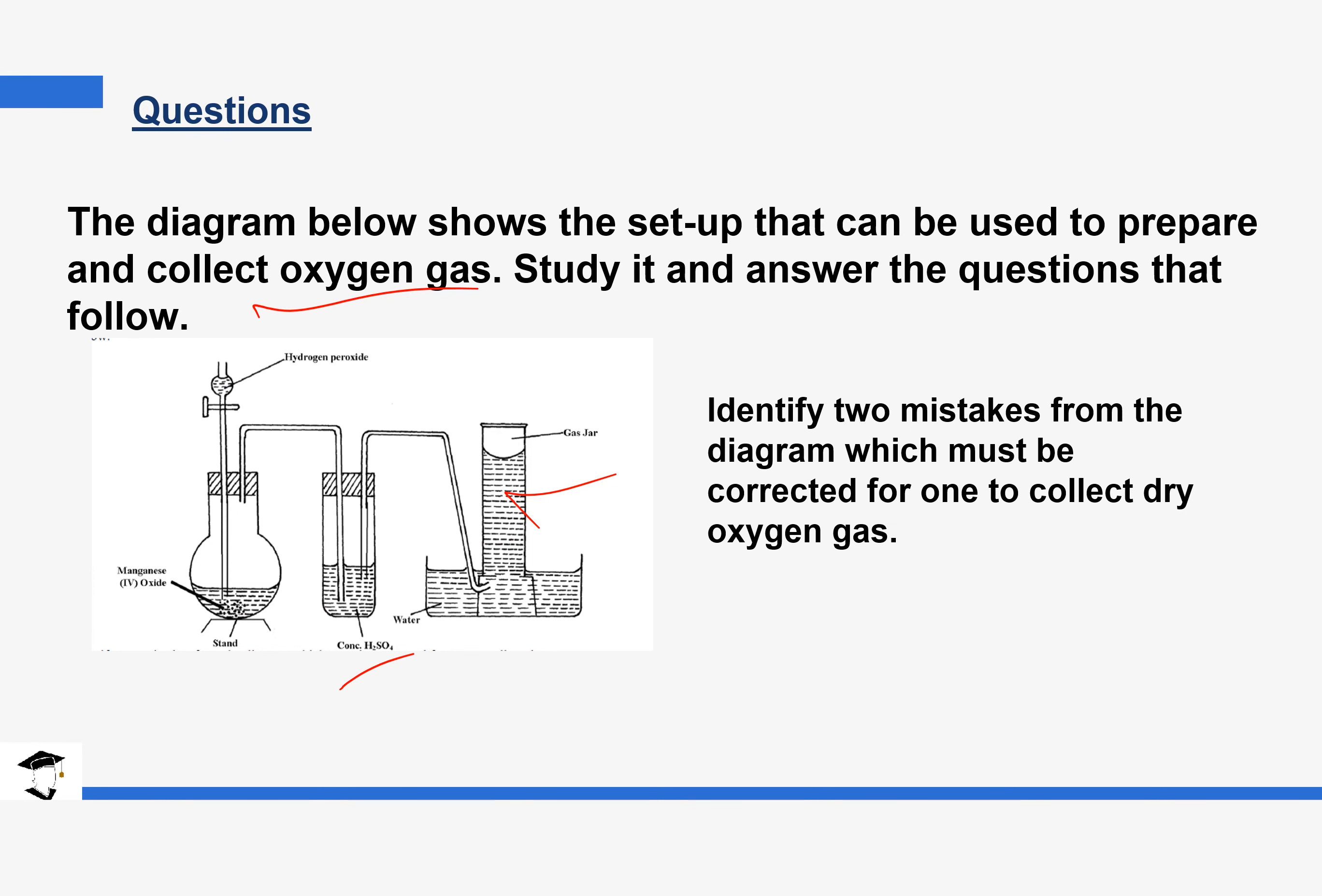So the question is identify two mistakes from the diagram which must be corrected for one to collect dry oxygen gas. So the first thing we noticed we said is the tube that is getting the gas should not be inside the acid. It needs to be, the one that is delivering the gas should be inside but the one that is getting the dry gas should be on the outer side. It shouldn't be dipped in the solution. So that is one of the mistakes we notice in this setup. This tube should not be on the solution like this one. This one is supposed to be on the outer part. The second mistake we notice is that the gas is being collected by over water method and our question says that we're supposed to collect a dry oxygen gas. If we collect it by over water method then it is not dry. It's no longer dry.